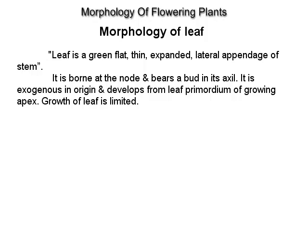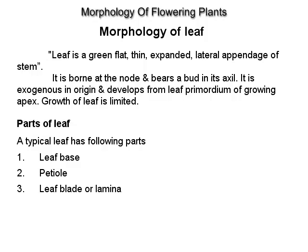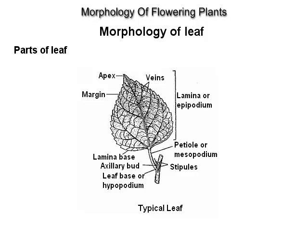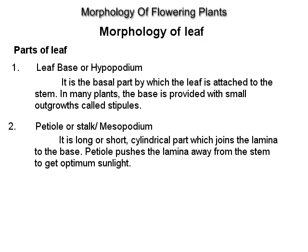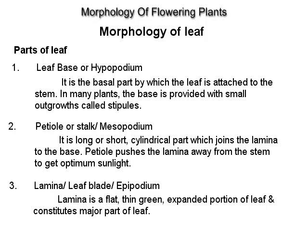Morphology of a leaf. A leaf is a green, flat, thin, expanded lateral appendage of the stem. It is borne at the node and bears a bud in its axil. It is exogenous in origin and develops from the leaf primordium of the growing apex. Growth of the leaf is limited. Parts of a leaf: leaf base, petiole and leaf blade or lamina. Leaf base or hypopodium is the basal part by which the leaf is attached to the stem, often provided with small outgrowths called stipules. Petiole or stalk joins the lamina to the base and pushes the lamina away from the stem to get optimum sunlight. Lamina is a flat, thin, green, expanded portion and constitutes the major part of the leaf.